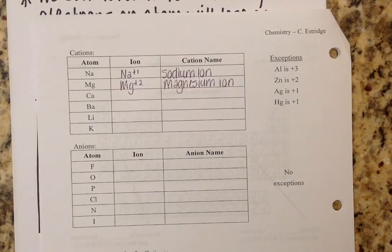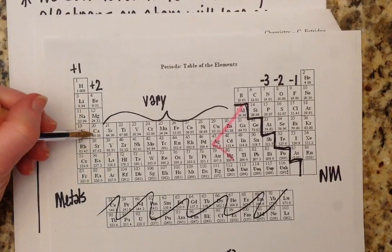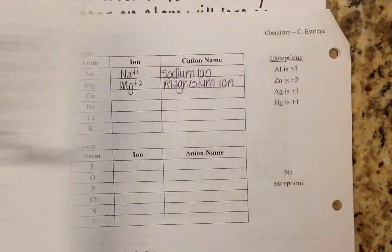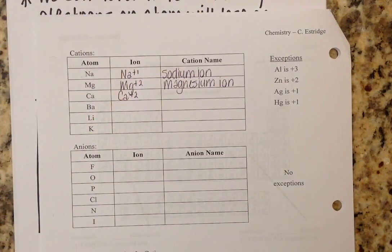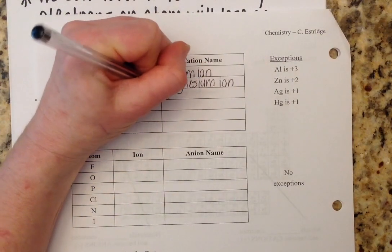Calcium is in column two. For that reason, it has a plus two charge. Told you this is super easy. And we would refer to this as the calcium ion.